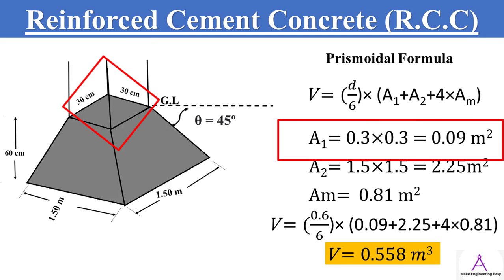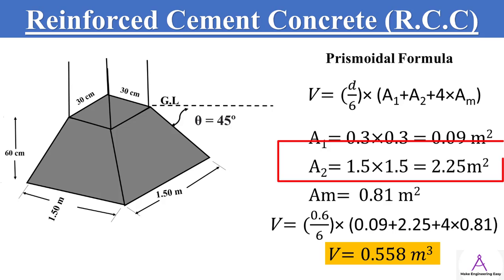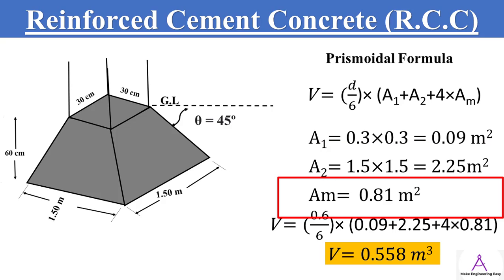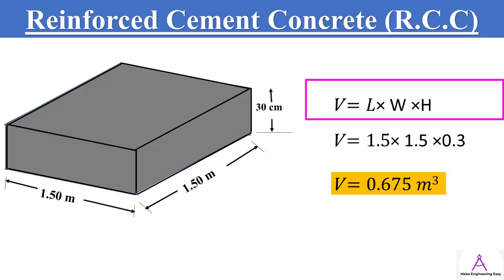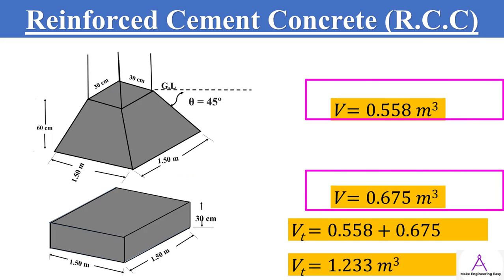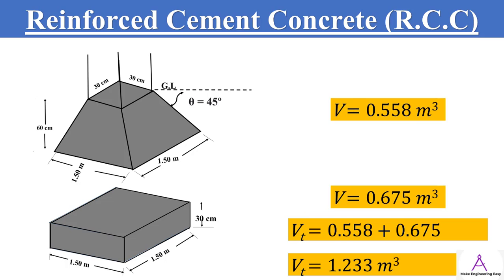By putting the value of the top area of the column, base area of the footing, and mean area into the equation of prismoidal formula, we get the volume equal to 0.558 cubic meters. For the rectangular portion, multiply length, width, and height. Now add these two volumes to get the total quantity of reinforced cement concrete for trapezoidal footing. The total quantity of RCC used in this footing is 1.233 cubic meters.